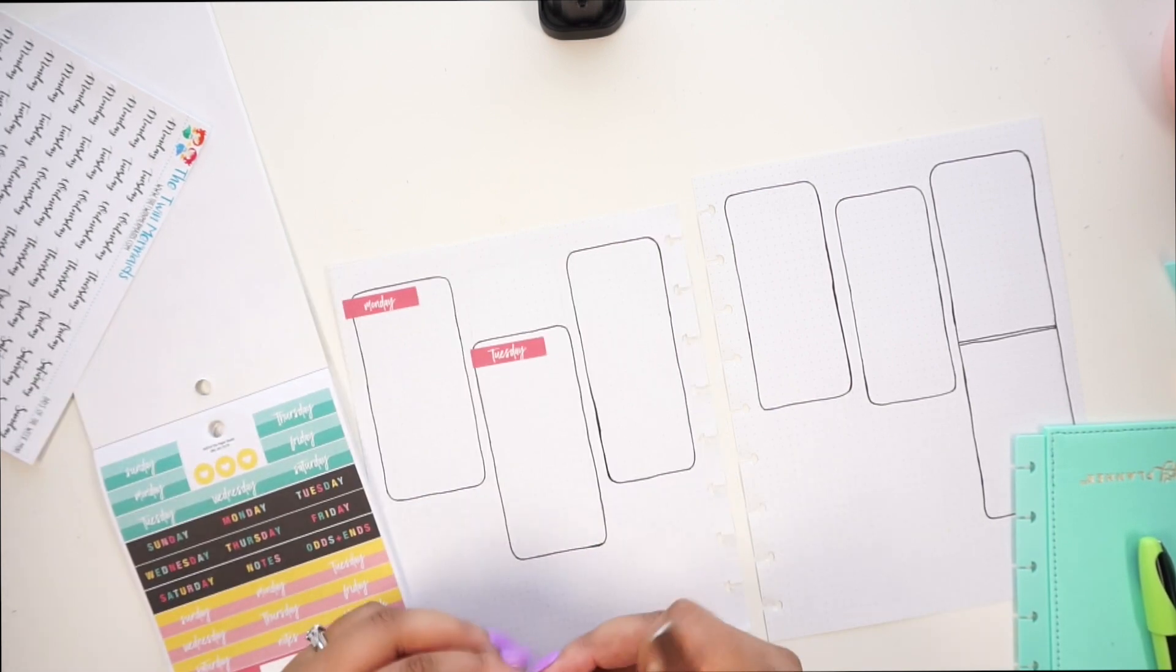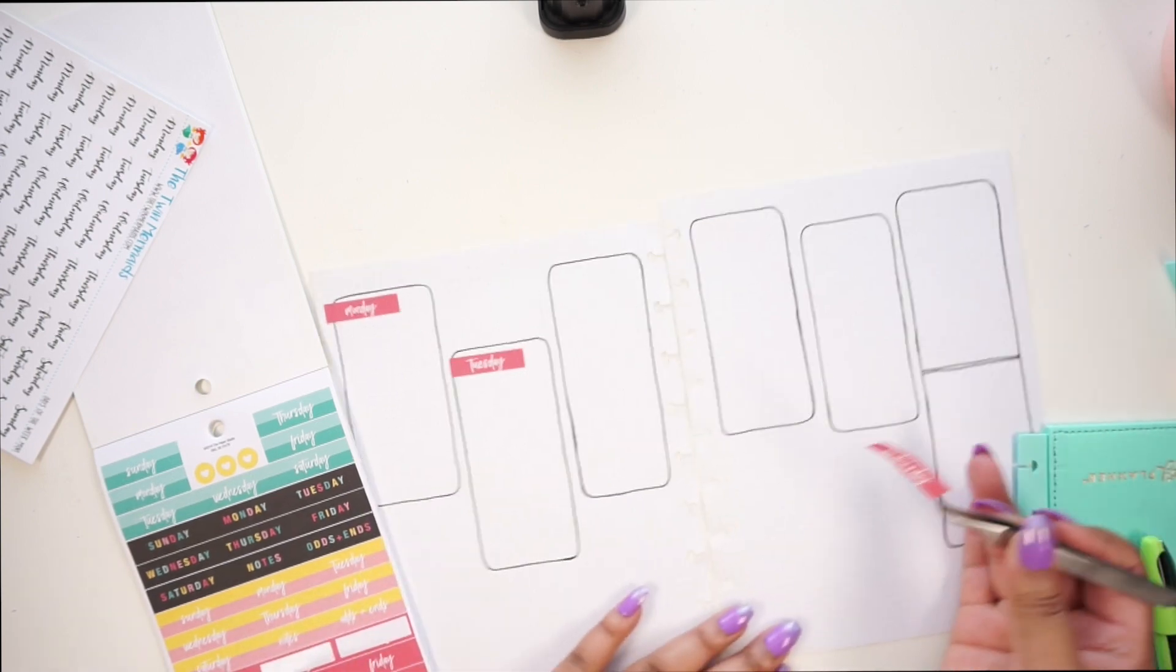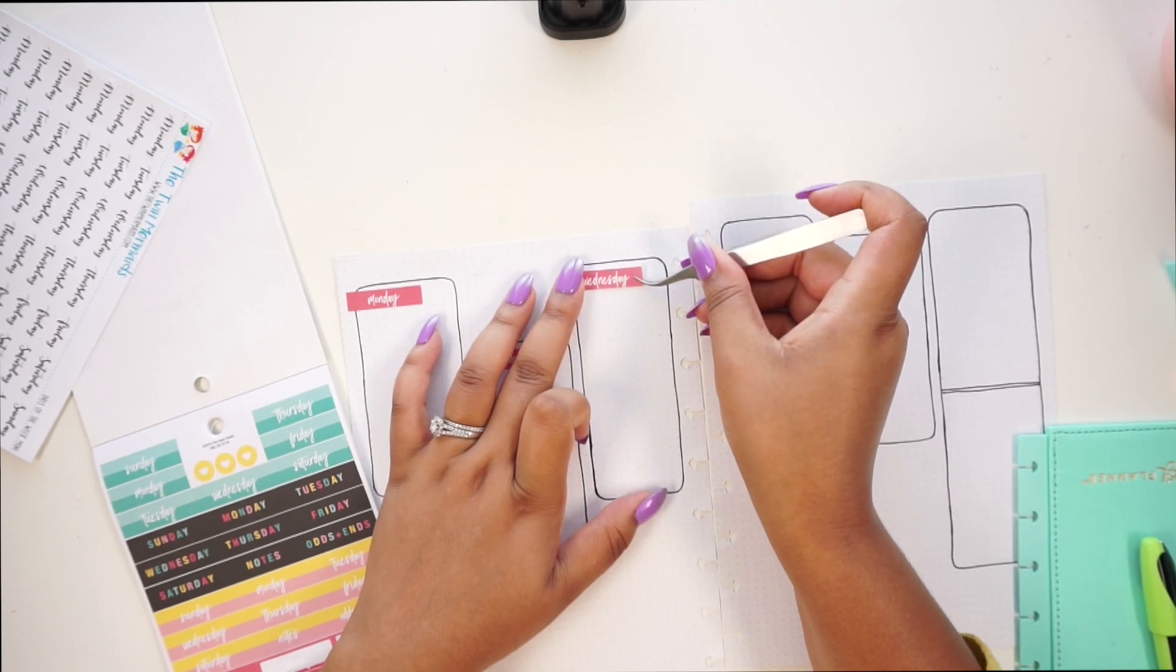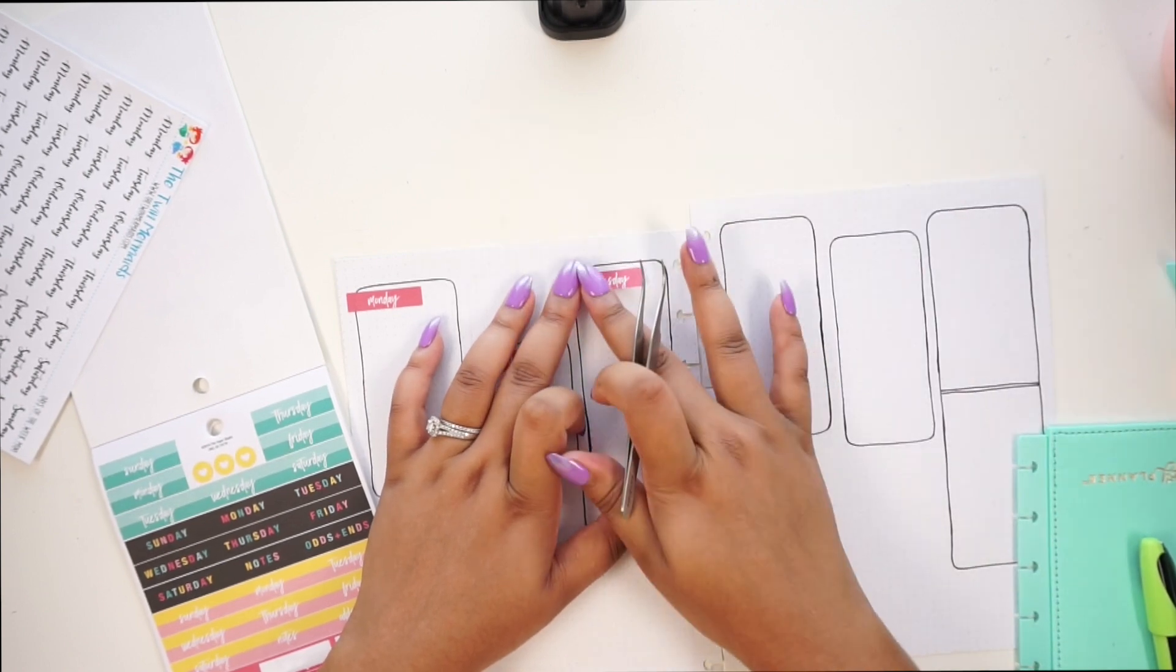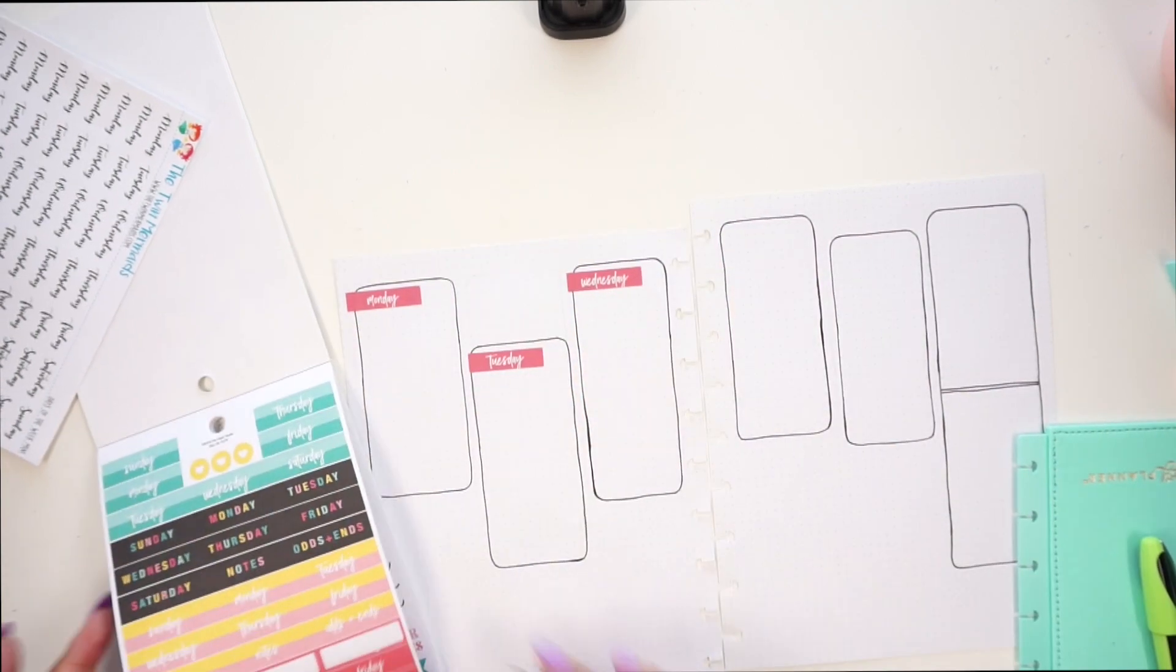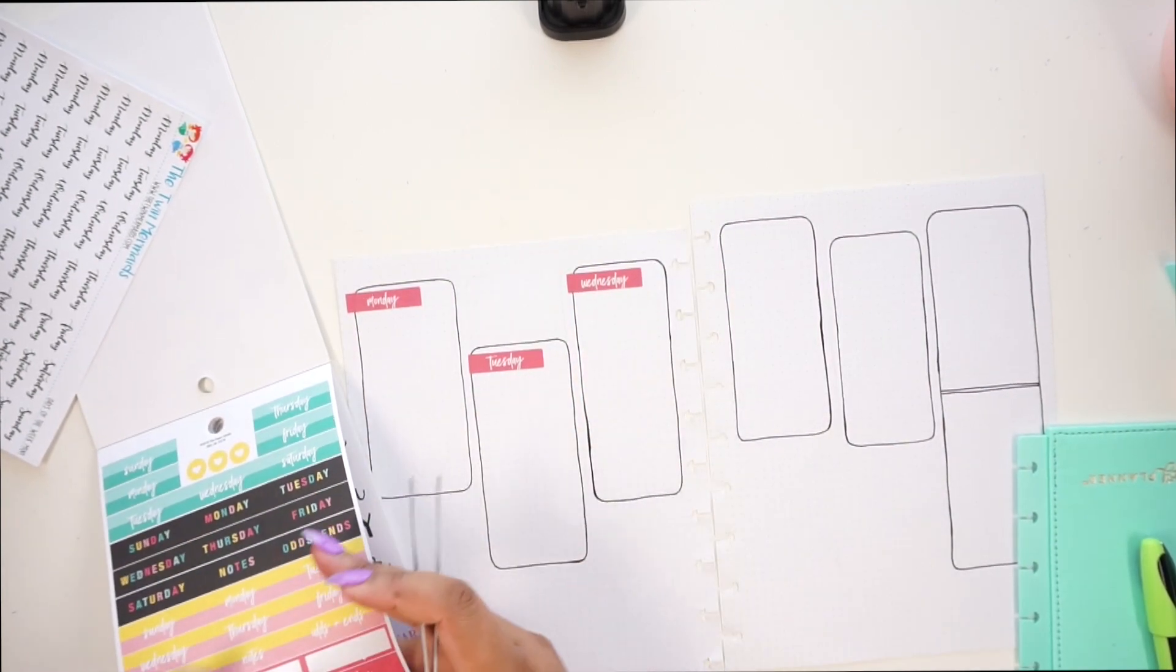So I think once you have, I mean, my boxes aren't perfect and stuff, but once you start adding stickers that are like the same shape and everything, it kind of anchors it and makes it more stable looking, not so shaky.